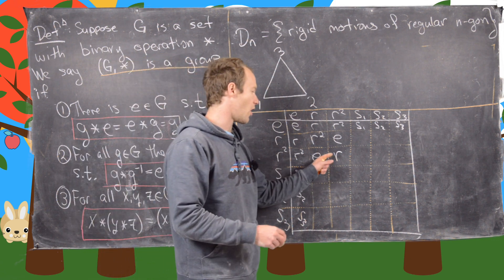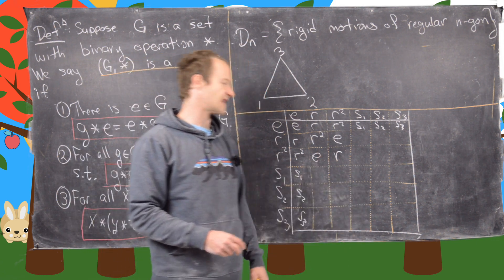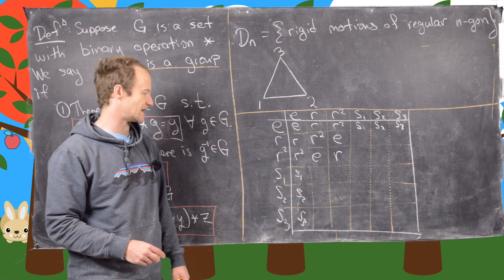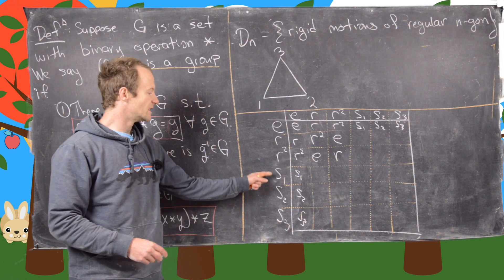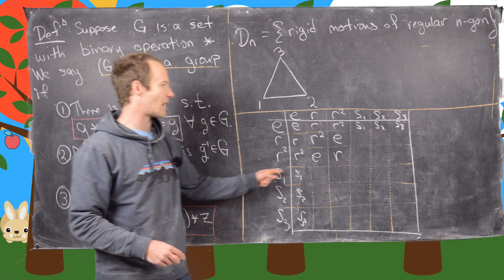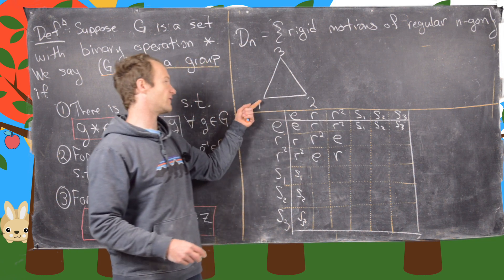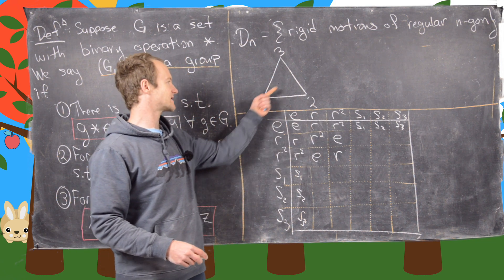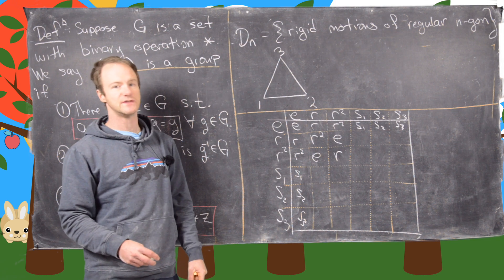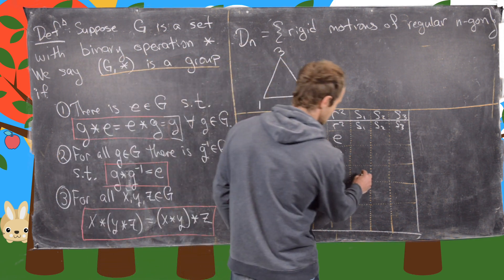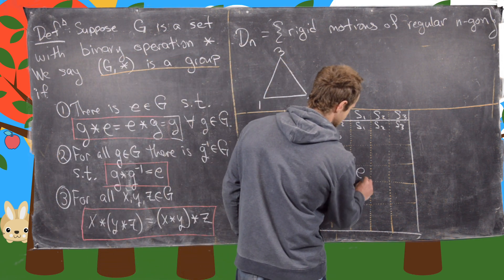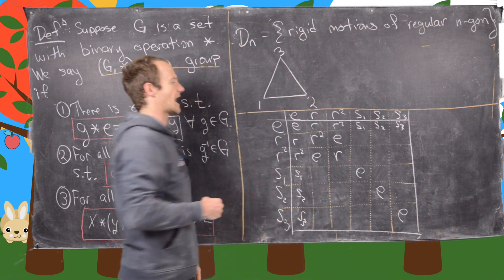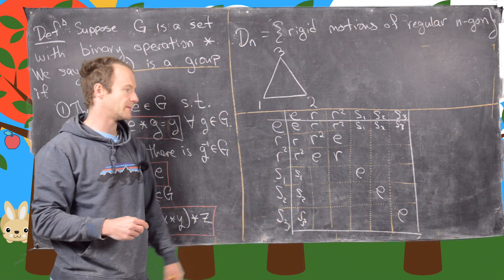Now let's look at the reflections we already know. If we do a reflection with itself, we get back to the identity. So reflecting about the axis through vertex 1 and doing it again gives the identity — and likewise for the axes through vertex 2 and vertex 3. That fills in those diagonal entries. Now we have the cross-combinations to work on.